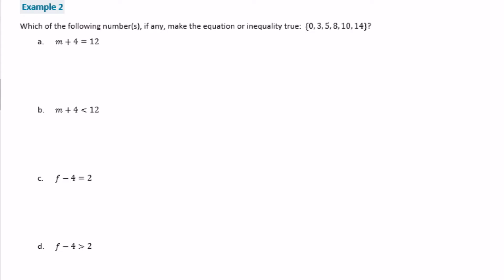Example 2: Which of the following numbers — 0, 3, 5, 8, 10, or 14 — make the equation or inequality true? For part a, m plus 4 equals 12. Solving: m plus 4 minus 4 equals 12 minus 4, so m equals 8. The only value that makes this true is 8, which is one of our choices. Nothing else will make this true.